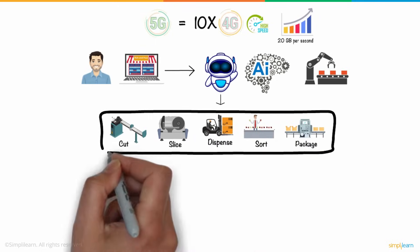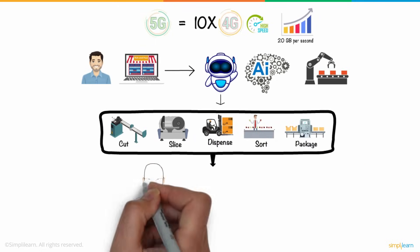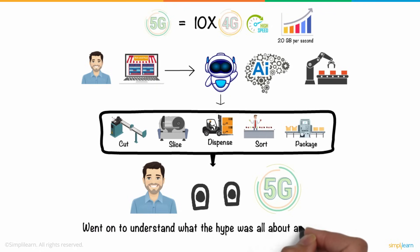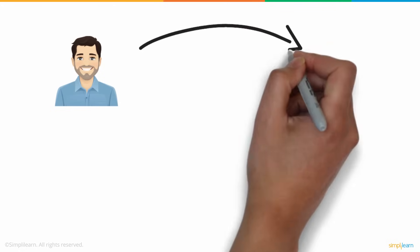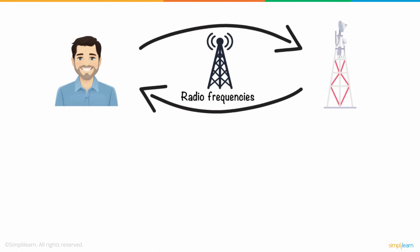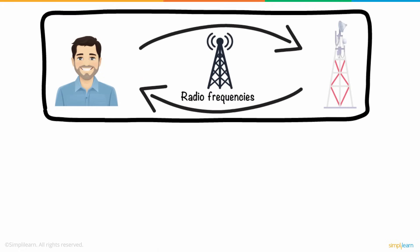and package his products. And this is exactly what Ted was looking for. He was intrigued by the term 5G and went on to understand what the hype was all about and how different it was from its predecessors. Ted first learned that any information that he sends or receives in a network is carried through the air with the help of radio frequencies.